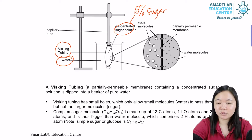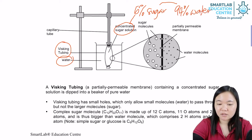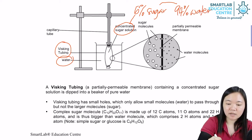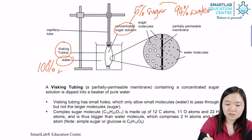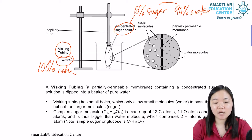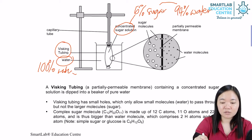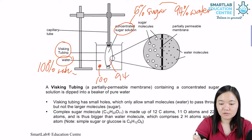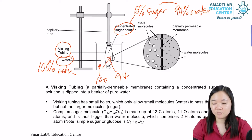Six percent sugar means you have 94 percent water. Distilled water, on the other hand, has 100 percent water. So which one has higher water potential? Of course the distilled water side has higher water potential because it is 100 percent, while this one is 94 percent.